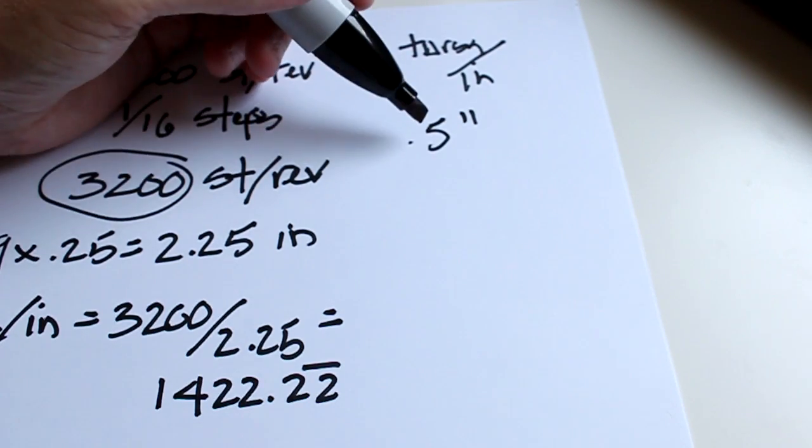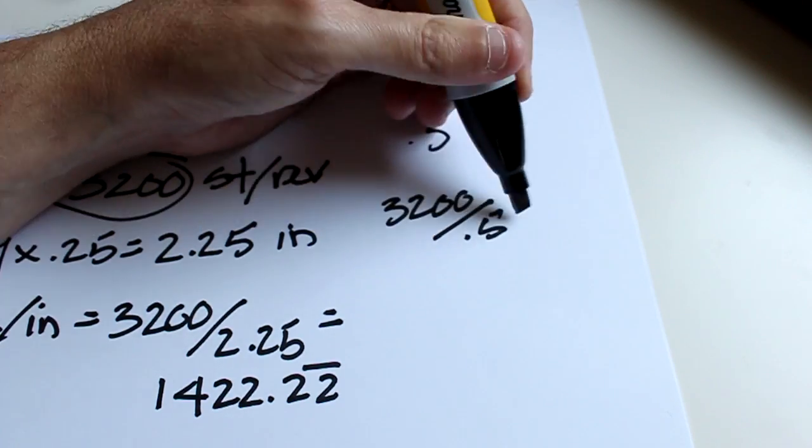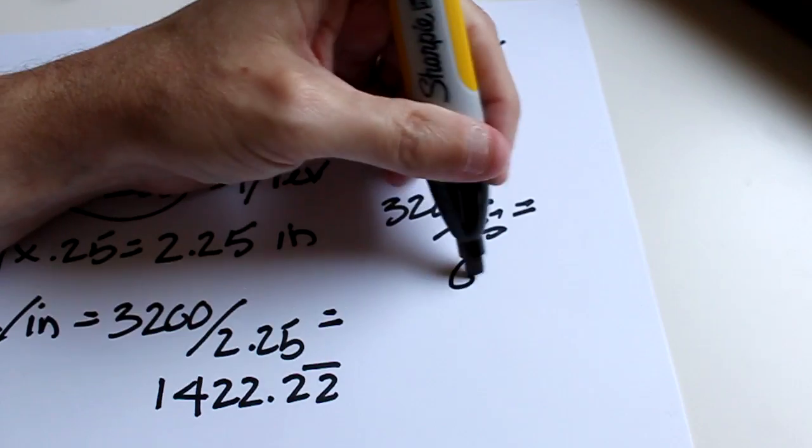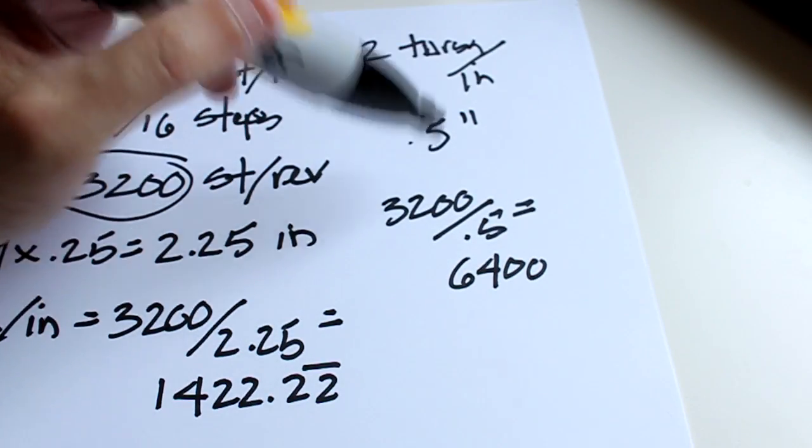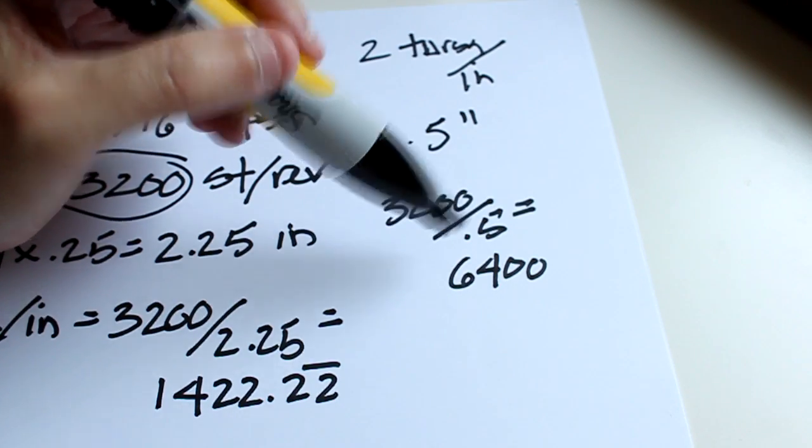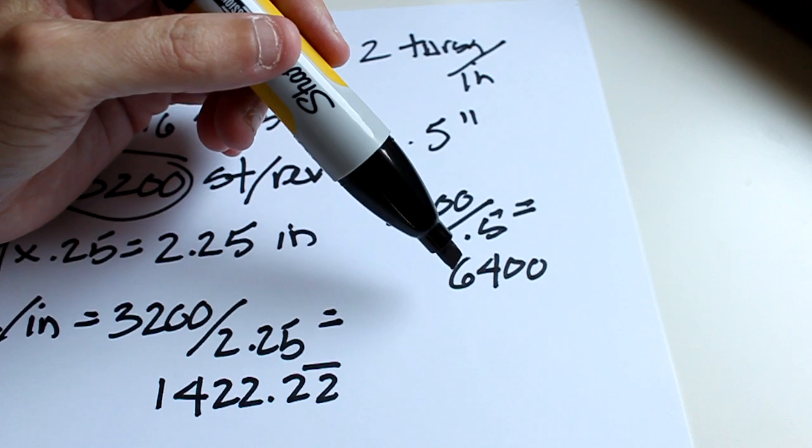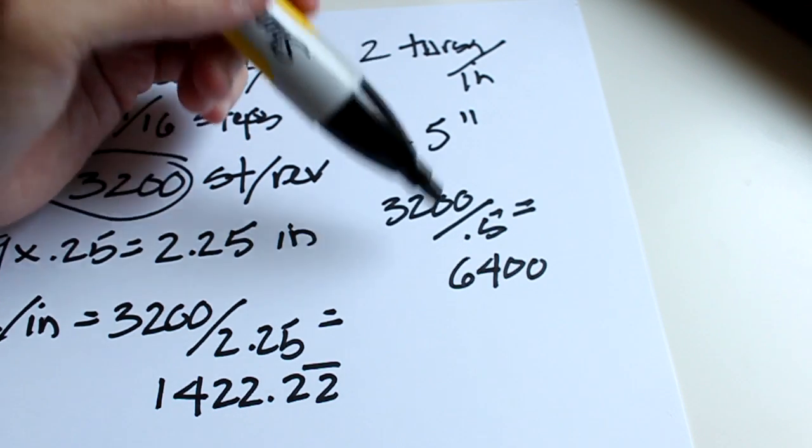What you do is you take that number, you take the 3200 and you divide it by 0.5 and you'll notice that is 6400 and that is quite high. So we know that 1/16th microstepping may be too much for a lead screw, and anyway you'll need more torque for driving a lead screw since there's more friction while you're turning the lead screw in an anti-backlash nut.